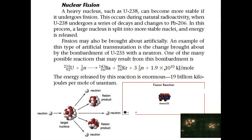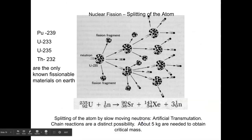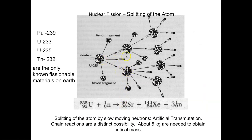Fission gives up a tremendous amount of energy — about a thousand times more than we see in chemical reactions. With fission you can have an uncontrollable chain reaction or a controlled chain reaction. Here are the four known fissionable isotopes.